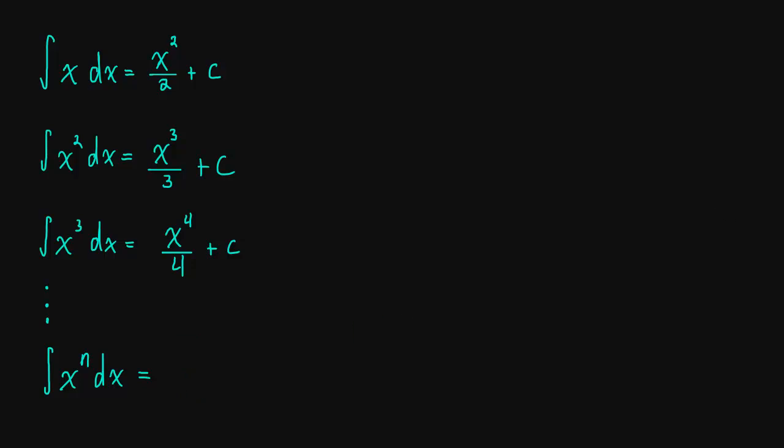Hopefully you're back from pausing the video. The pattern here that we've established is we're taking the power that x is to and we're adding 1 to that power. So we're increasing the exponent by 1, and then we're dividing by that new power.